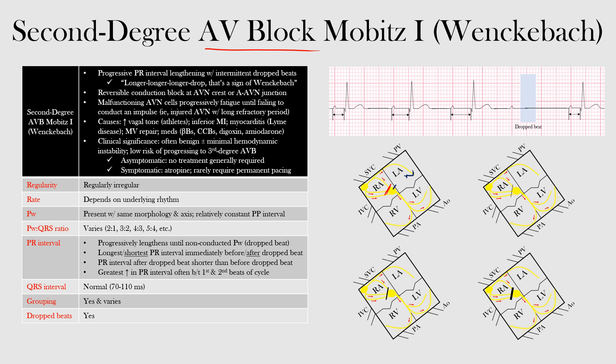When we look at our intervals, the PR interval runs from the beginning of the P wave up until the QRS complex. When looking at Mobitz type 1 and type 2 blocks, we focus on this area. Both will have dropped beats. What differentiates Mobitz type 1 is the progressive lengthening of the PR interval until we get a dropped beat.